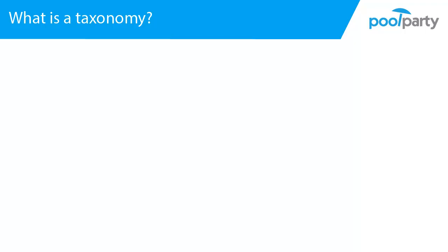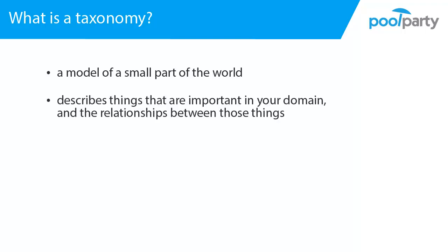We need to understand what a taxonomy is. A taxonomy is a model of a small part of the world. In a taxonomy you describe your domain — the things that are important in your domain and the relationships between those things. You can model everything you know about a domain in a taxonomy. Because of this, taxonomies are also called knowledge models.